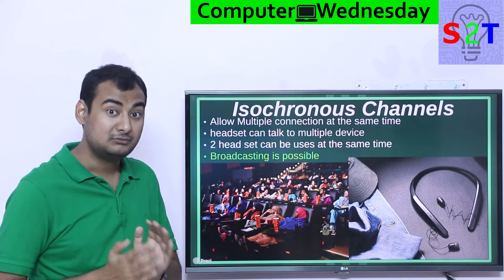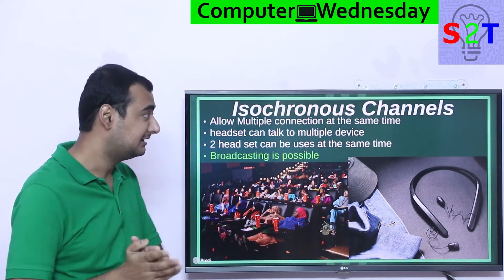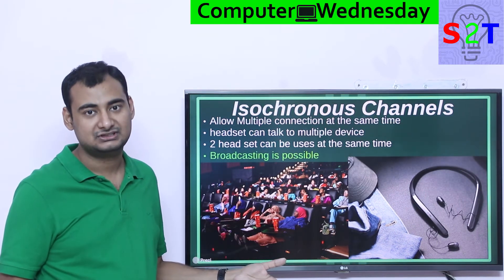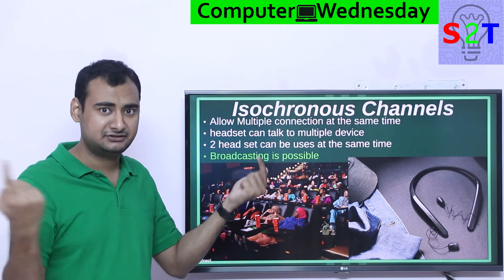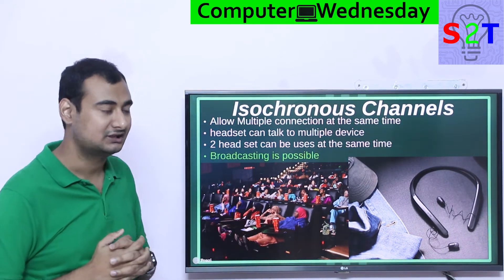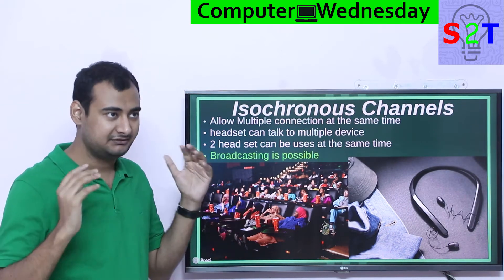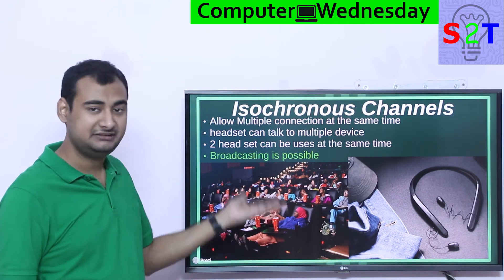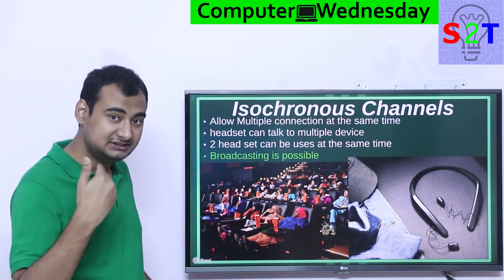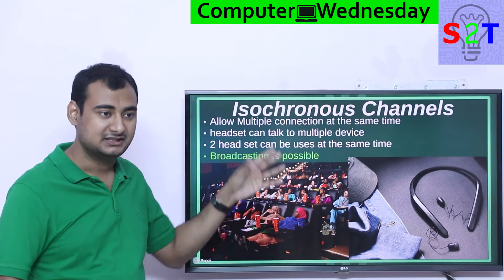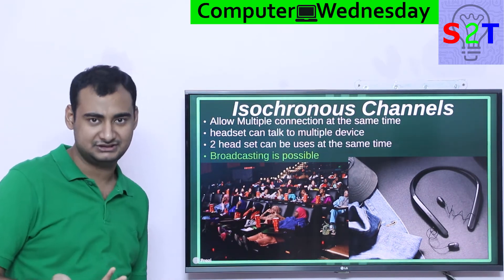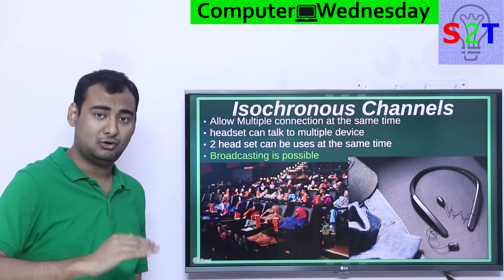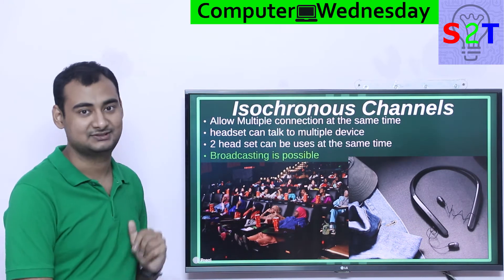Another benefit of isochronous channels is multiple headsets connecting to one source at the same time. Imagine living in an apartment where you can't use speakers — currently, a TV can only connect to one Bluetooth headset. With Bluetooth 5.2, you'll be able to connect four or five headsets simultaneously to the same TV, depending on the setup.